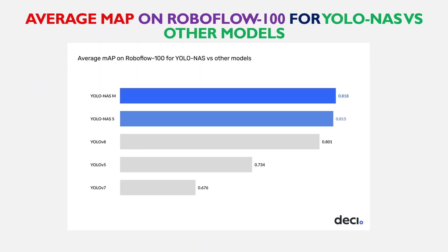Here a comparative analysis of YOLO NAS versus other YOLO models is presented. We can see that YOLO NAS outperforms all other YOLO models in terms of mean average precision on the RoboFlow 100 dataset as the benchmark. YOLO NAS gives better mean average precision on the RoboFlow 100 dataset in comparison to other YOLO models.